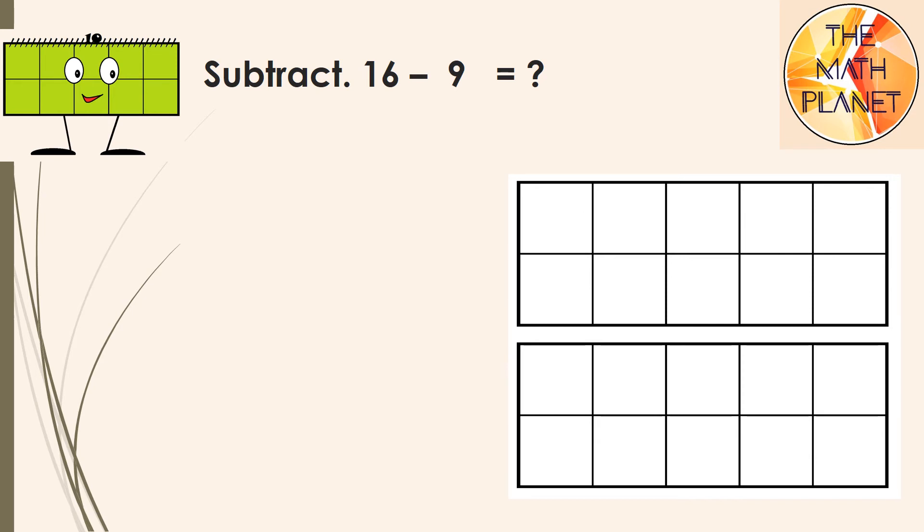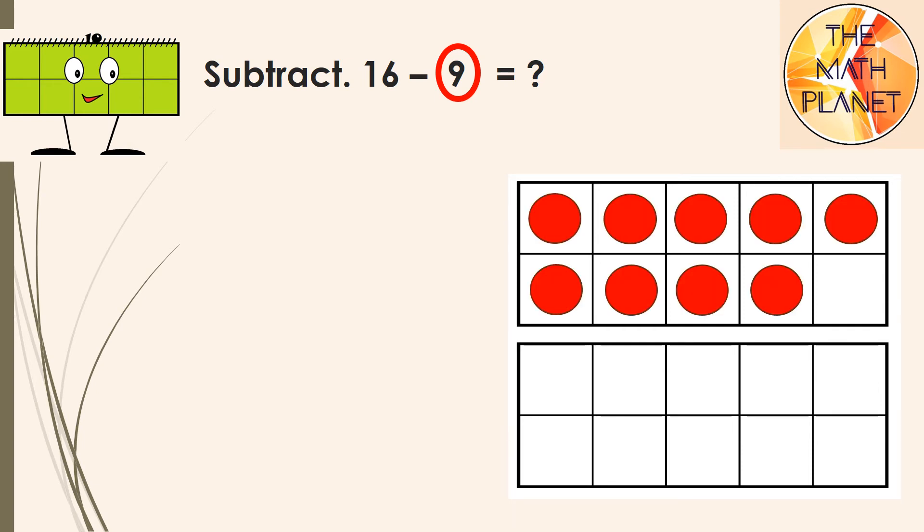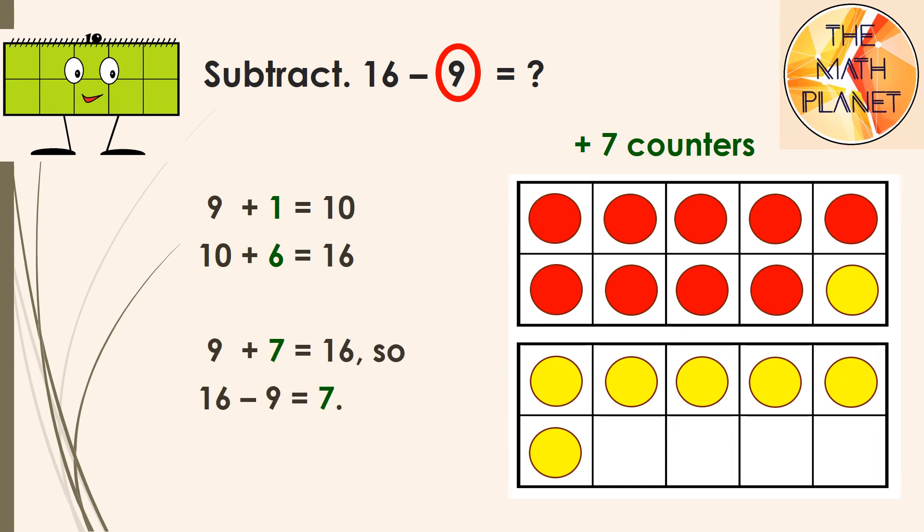Let's try to solve this example. To find 16 minus 9, I will start by drawing 9 counters on the 10 frames. Next, I will add to make 10, so I will add 1 counter. Next, I will add until I reach 16, so I will add 6 more counters. This means I added 7 counters. So, 9 plus 7 is 16, which means that 16 minus 9 equals 7.